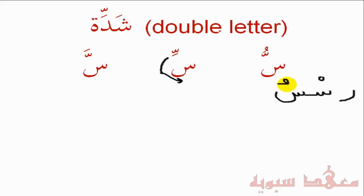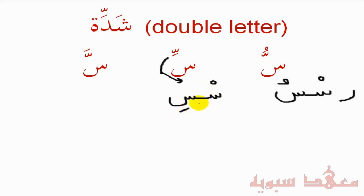To pronounce this we would say 'Res-su' — notice how I give emphasis to the double letter: 'Res-su.' Similarly, with the Shaddah and Kasrah, the Sukun is on the first Seen followed by the Kasrah on the second. So putting the Ra in front, it would pronounce as 'Res-si' — notice how I give emphasis to the Seen: it's the doubling of the letter, not a light 'Res-si' but 'Res-si.'